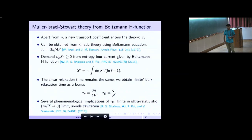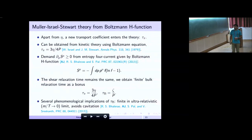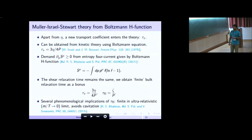What we did essentially is: we wrote down the entropy four-current in terms of the distribution function. Given the distribution function f away from equilibrium, if we demand the second law of thermodynamics from the entropy four-current, we can obtain exactly the same equation — where all the transport coefficients are now known, because we started from the form of f. If we know f away from equilibrium, we can determine everything. We got nice expressions for the relaxation times, which we checked for implications in ultra-relativistic heavy-ion collisions.